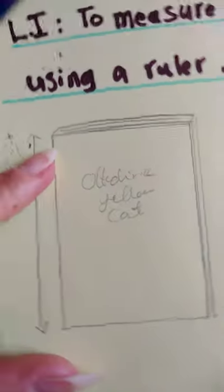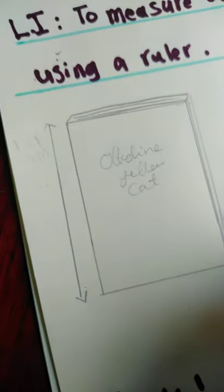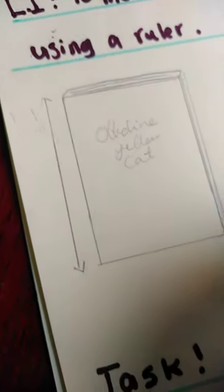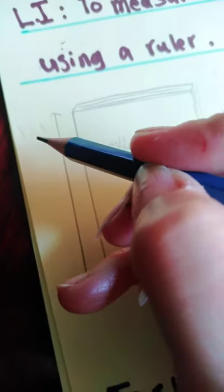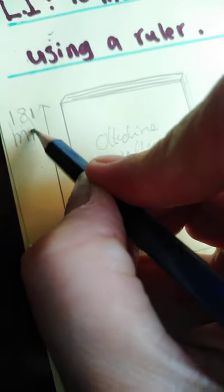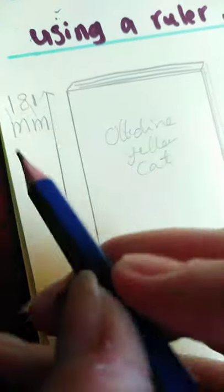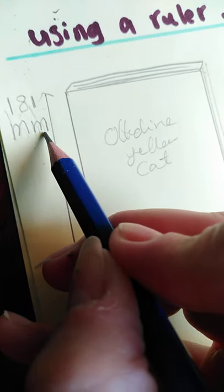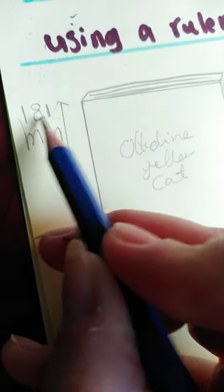Now I'm going to record my measurements. Here I drew the book and I need to write my measurements. It was 181 millimeters. This is how we're going to write millimeter.